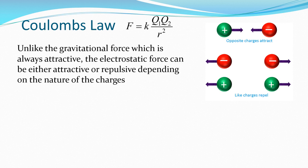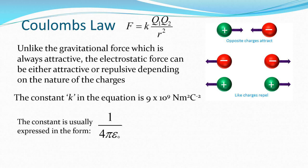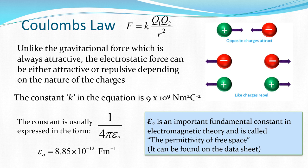Unlike the gravitational force, which is always attractive, the electrostatic force can be either attractive or repulsive depending on the nature of the charges. The constant K in the equation is 9 times 10 to the 9 Newton's metre squared coulombs to the minus two. The constant is usually expressed in the form one over four pi epsilon naught, where epsilon naught is the permittivity of free space, which is 8.85 times 10 to the negative 12 farads per metre. However, it is absolutely fine to use K equals 9 times 10 to the 9 as opposed to one over four pi epsilon naught.